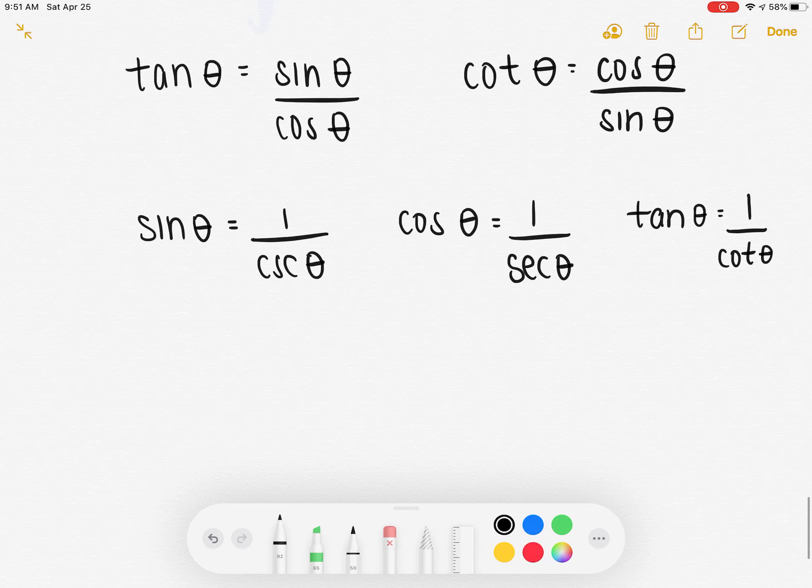You can also flip them around. If you have cosecant, you can write one over sine. If you have secant, you can change it to one over cosine, or if you have cotangent, you can change it to one over tangent.